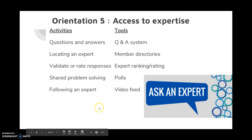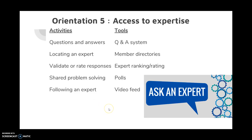The fifth orientation we'll call ask an expert, or access to expertise. You're going to need a question and answering system. You'll also need to address polls and video feedback, as well as member directories. That's the fifth orientation.